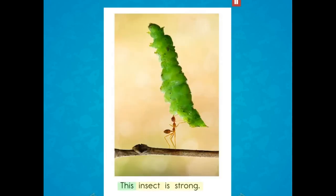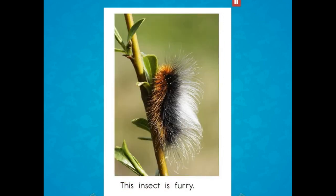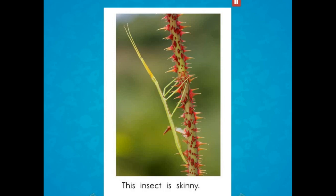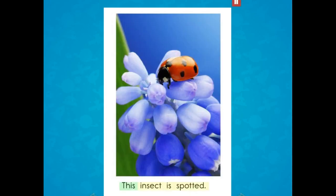This insect is strong. This insect is fast. This insect is furry. This insect is skinny. This insect is shiny. This insect is spotted.